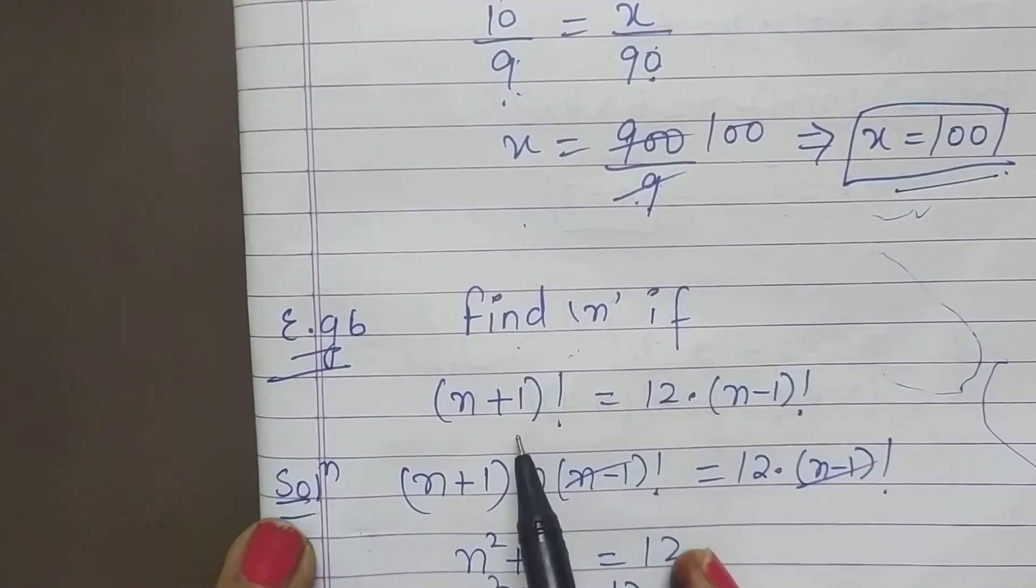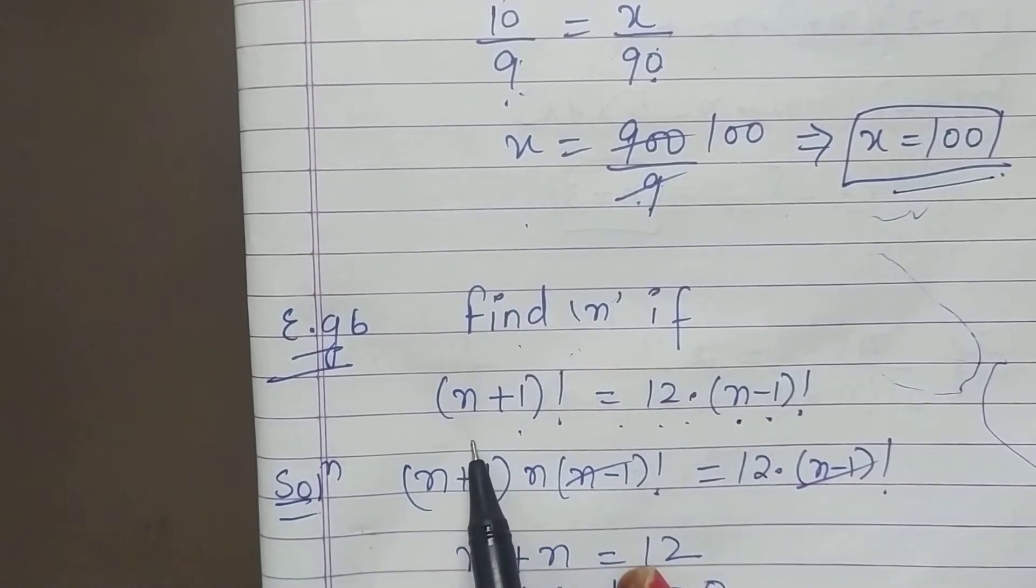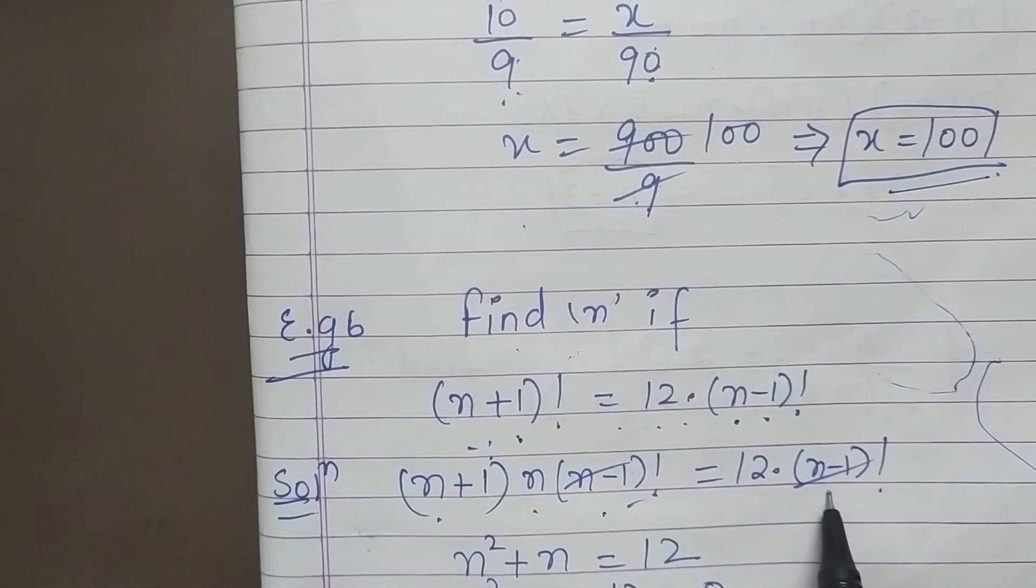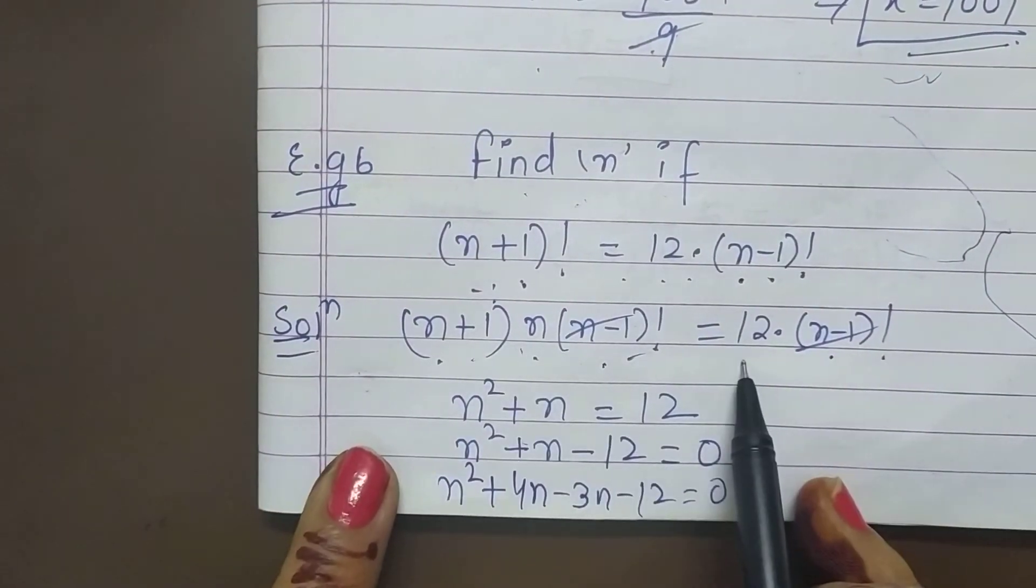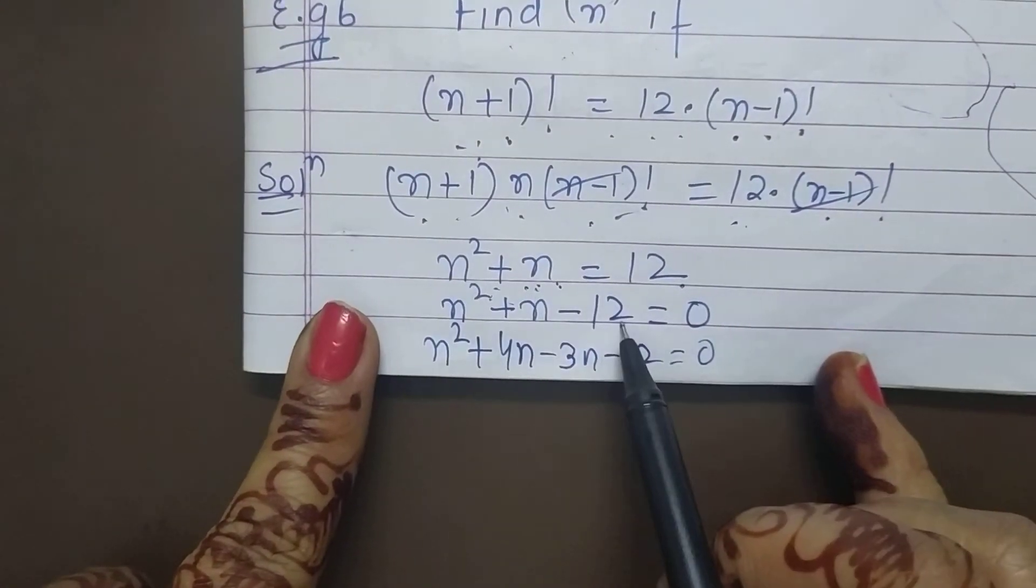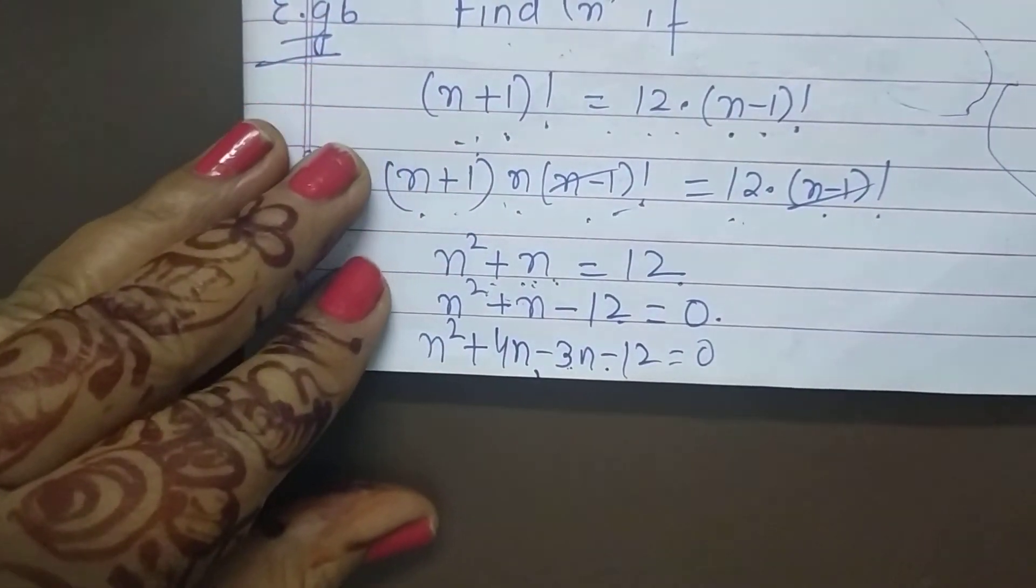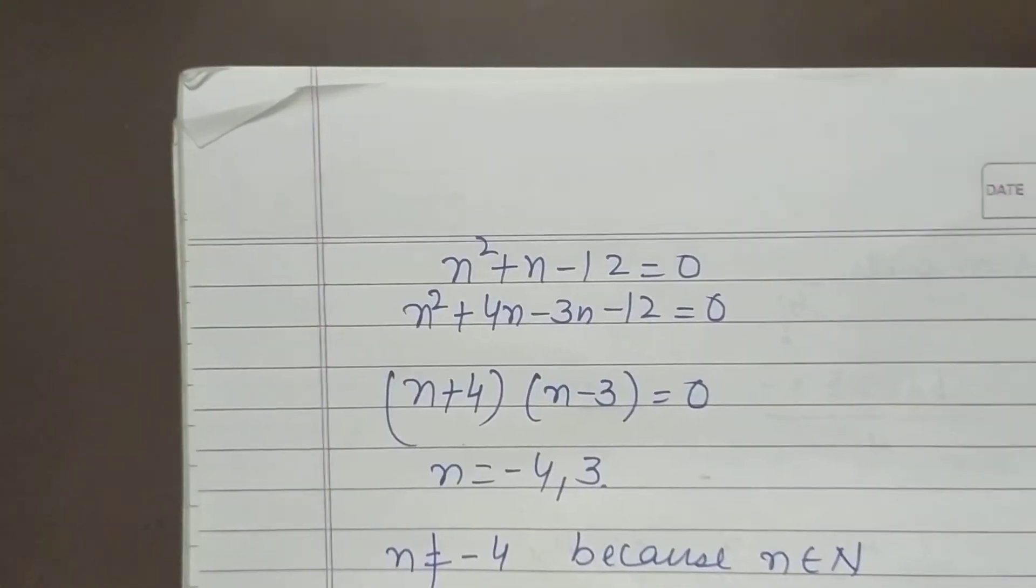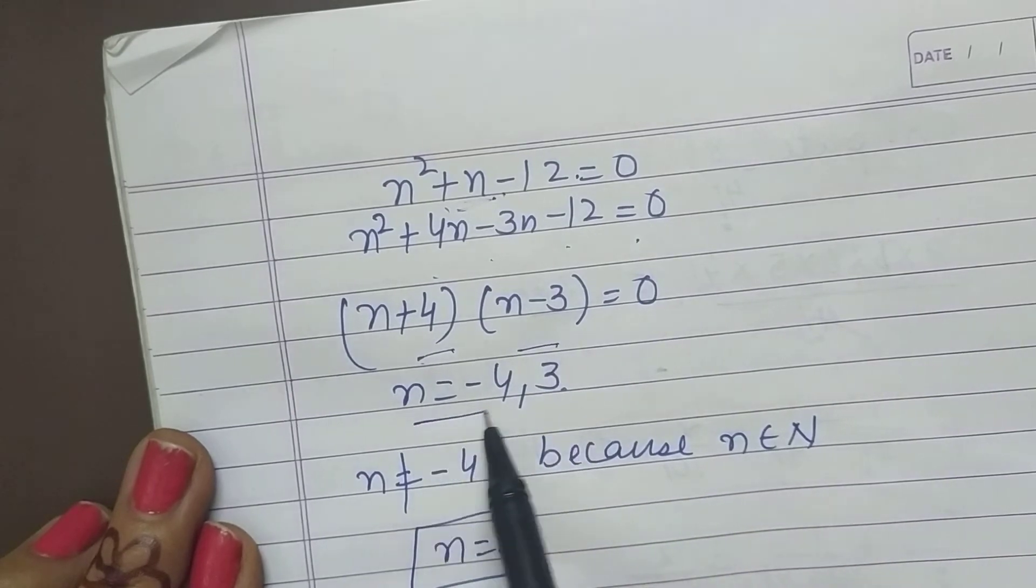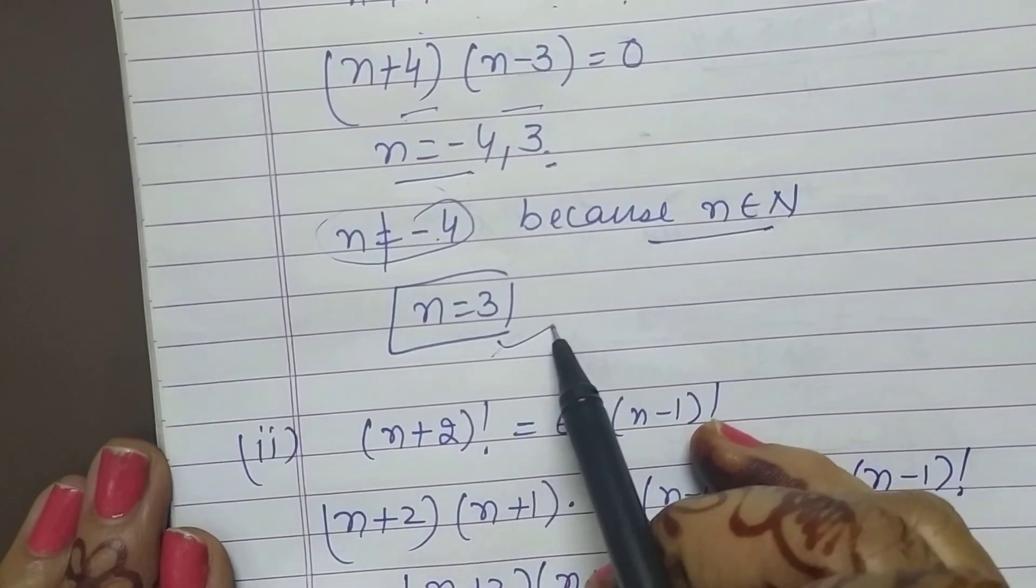Next one. Find n if (n+1) factorial is equal to 12 into (n-1) factorial. So in this which one is larger? n minus 1 or n plus 1? n plus 1. Open n plus 1: (n+1) times n into (n-1) factorial. And this and this cancel. What you got? (n+1) into n is equal to 12. Multiply. n square plus n is equal to 12. So after that what comes? n square plus n minus 12 is equal to 0. Splitting the middle term: n square plus 4n minus 3n minus 12 is equal to 0. So now you can see next step. Two values came. One n value came minus 4, one 3. This cannot happen. Why cannot happen? Because what is n? Natural number. So we have only this value, n is equal to 3.